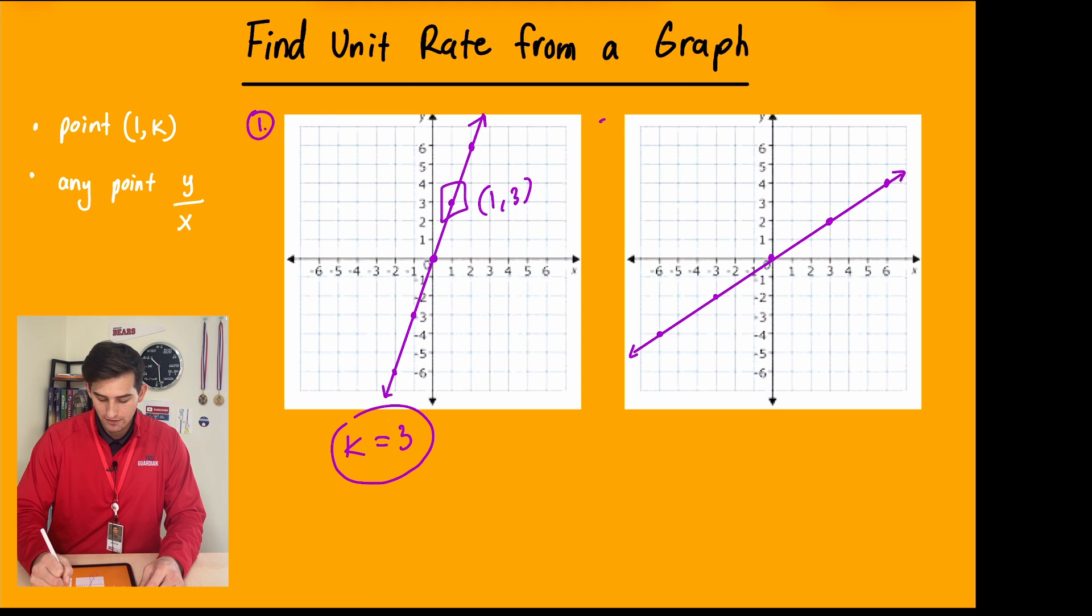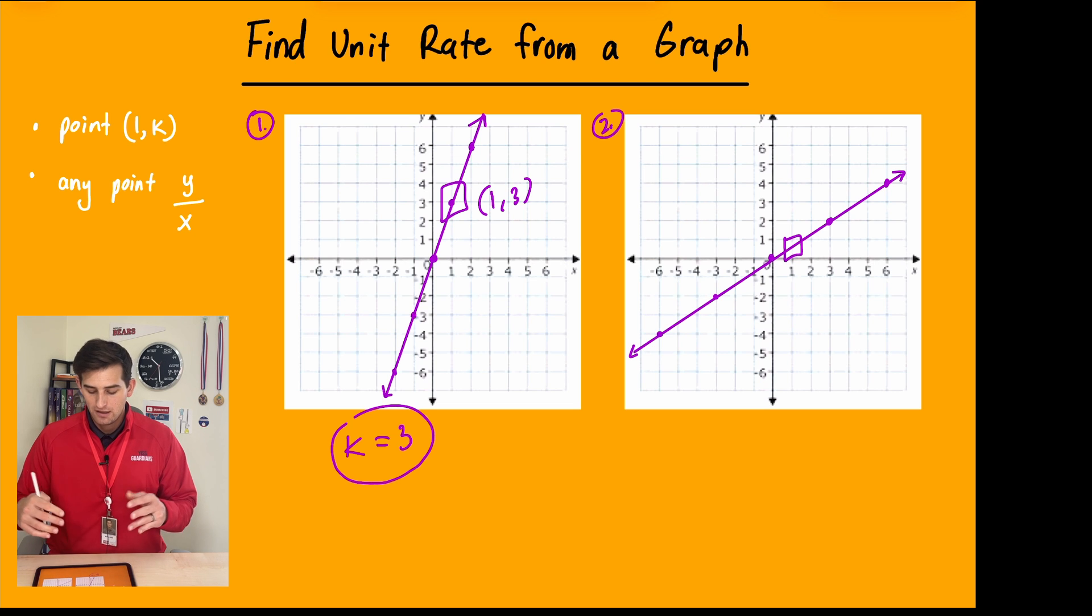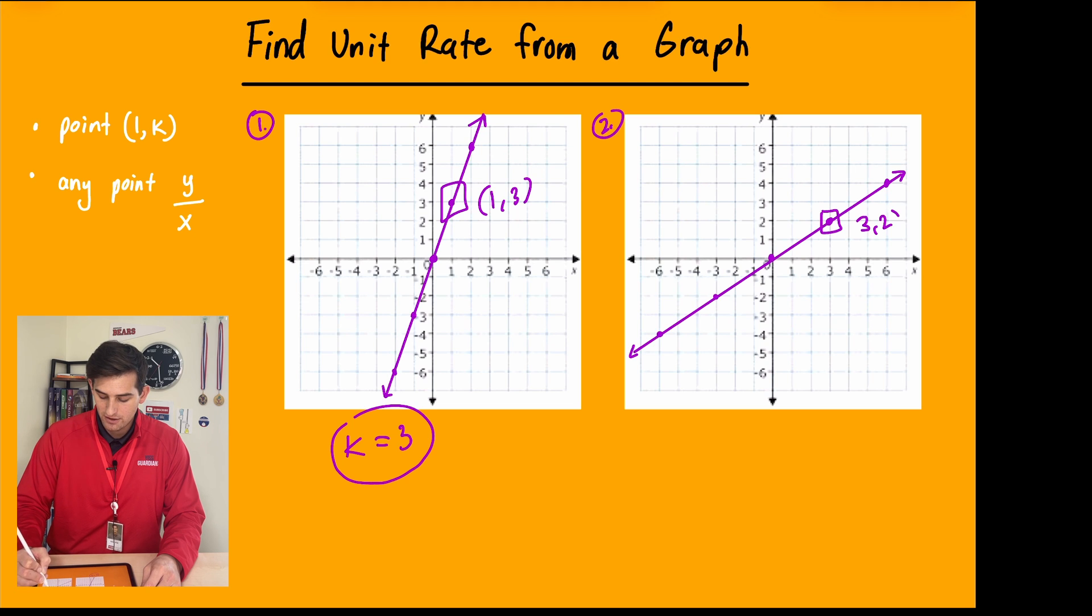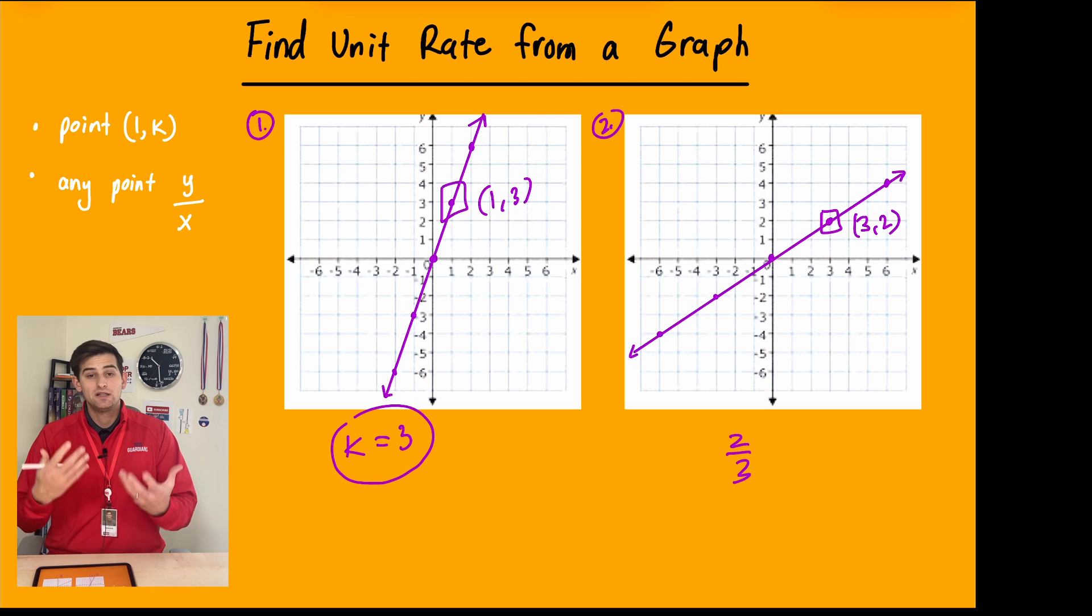Now, our example number two here, we see we do have this line crossing out when x is 1, but we can't really tell is it exactly 1 half? Is it 1 third? We don't know. So let's use one of the points that we have. Let's use this point right here. Let me take away this box. Let's use this point right here. Okay. So what is the coordinate here? This is 3, 2. All right. Now, any point, we could just do y divided by x. So in this case, it would be 2 divided by 3. Now, we can leave it like this because this fraction is in simplest form.